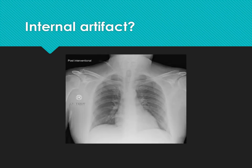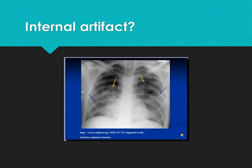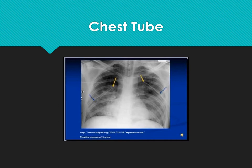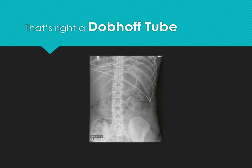What is this internal artifact? That's right — it's a central line placement. What is this internal artifact? That's right — it's a chest tube. Actually there are two, one in each lung. What is this internal artifact? That's right — a Dobhoff tube.